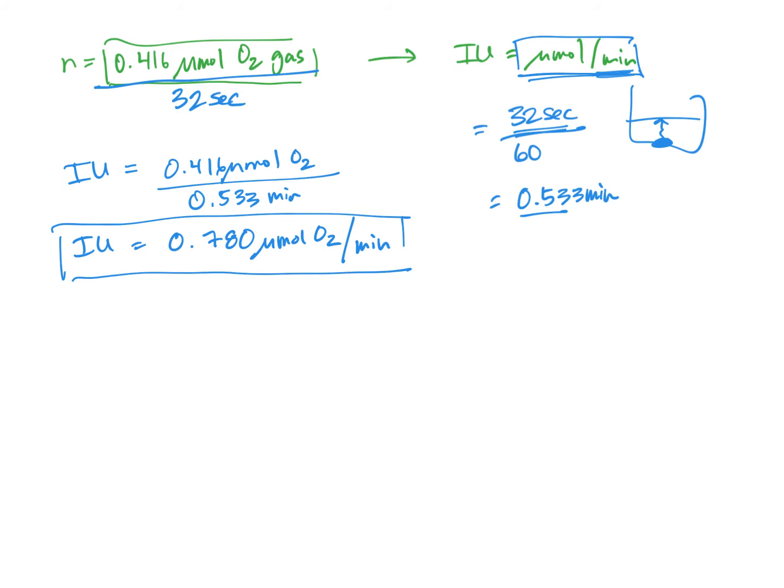But wait, we actually diluted the catalase 1 to 500 before doing this experiment. So that means we need to multiply this international unit number by 500 to represent what the actual concentration or the actual activity of catalase in your sample actually is. So let's say then 0.780 times 500, that gives us an international unit value of 390.